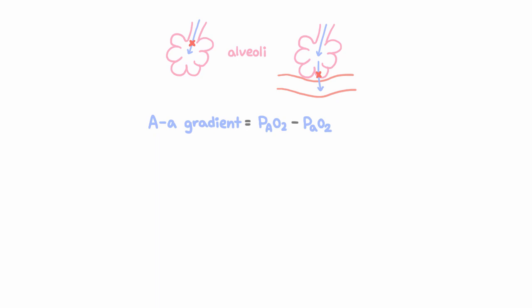And if they're not, if the AA gradient is elevated, that means we have a problem of this latter sort, that oxygen is having trouble getting from the alveolus into the blood.